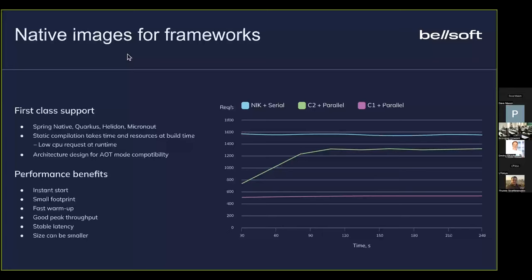In circumstances where heap usage is not that high or we just don't allocate too much, this particular benchmark represents a microservice with a very small working set of data. Here, the native image variant of this service shows better performance — it has a better baseline — and this native image uses a serial garbage collector. In this case HotSpot uses a parallel garbage collector, one of the more advanced garbage collectors.